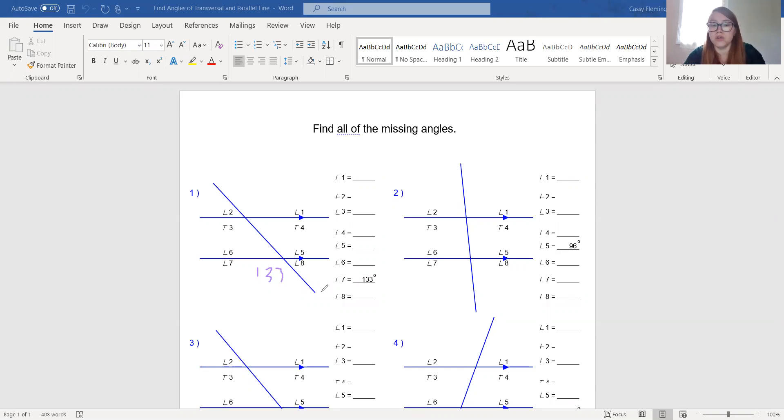Well we know that on this whole line right here, and if we look at angle 7 and angle 8, we know that those two added together have to be 180 because it's a straight line. So if we do 180 minus 133, we have to borrow. 10 minus 3 is 7, 7 minus 3 is 4, zero. So we know that the measure of angle 8 is 47.